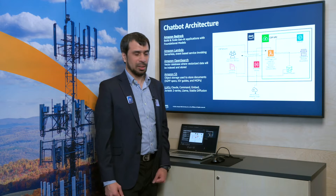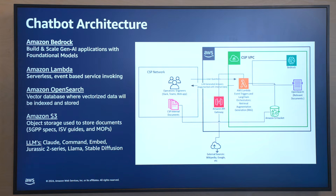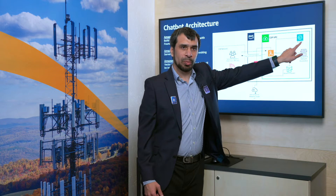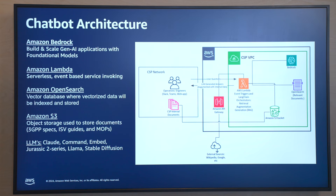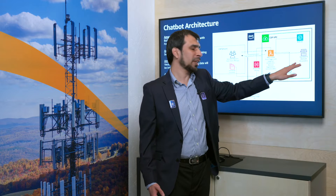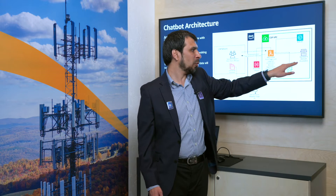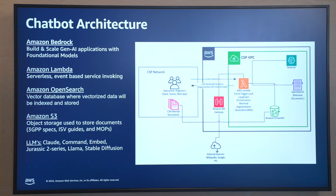In this architecture, we are using the Virtual Private Cloud — the VPC inside AWS — that is controlled and completely private for the customer. We are going to use Amazon Bedrock, which is a generative AI service from Amazon that hosts large language models. With a single API, you have access to multiple large language models. We are also using Amazon OpenSearch in a serverless version to make it more cost-effective, using it for indexing and vectorizing — essentially as a vector database.